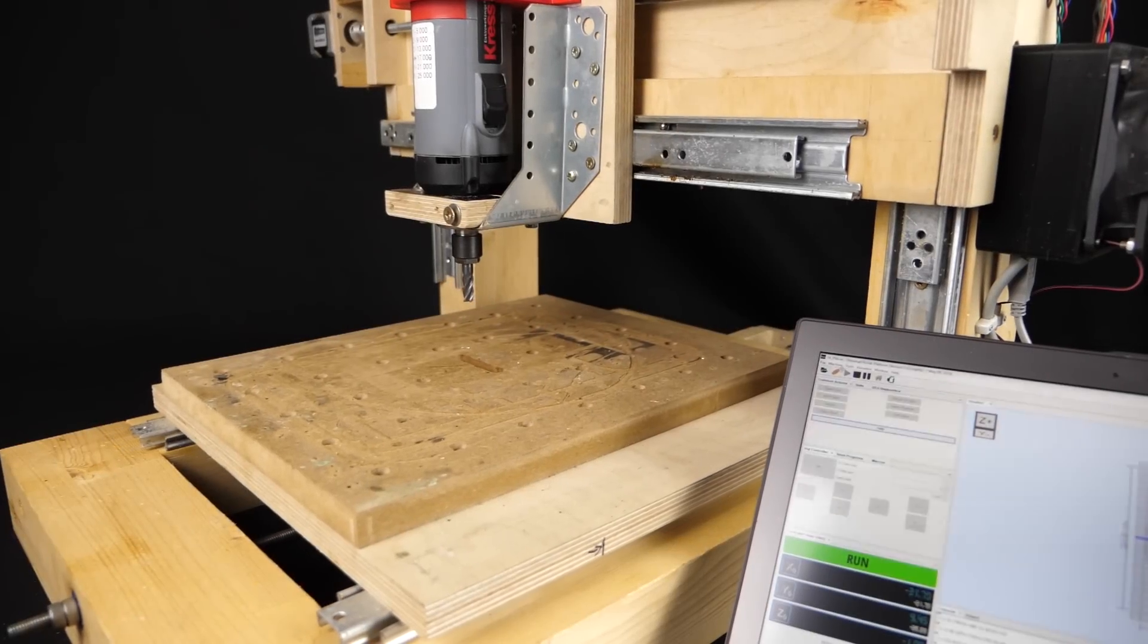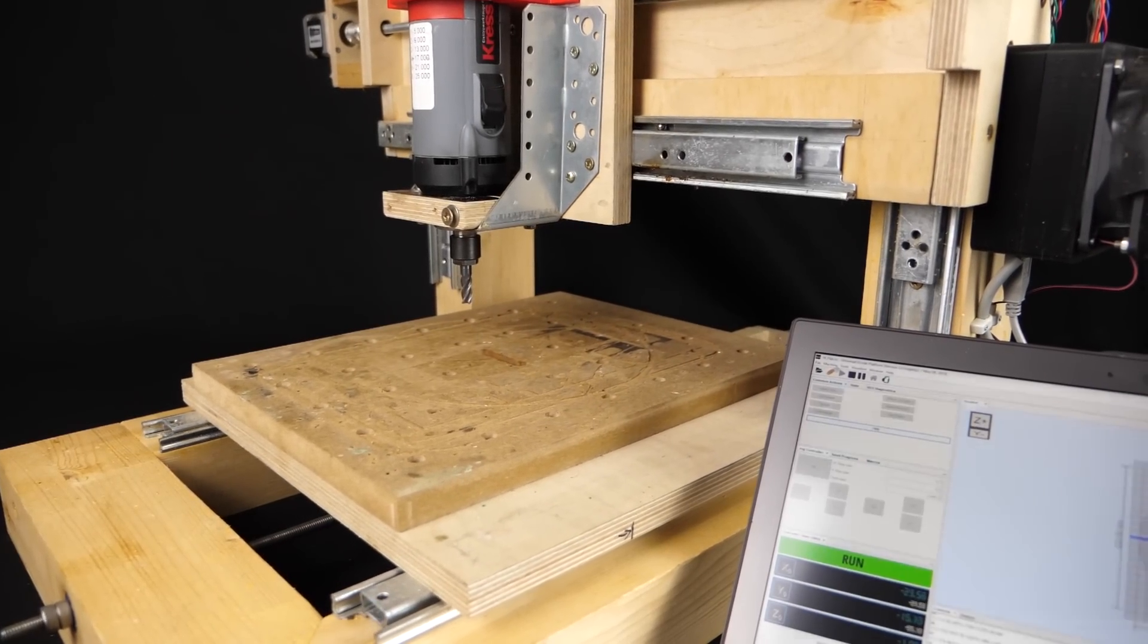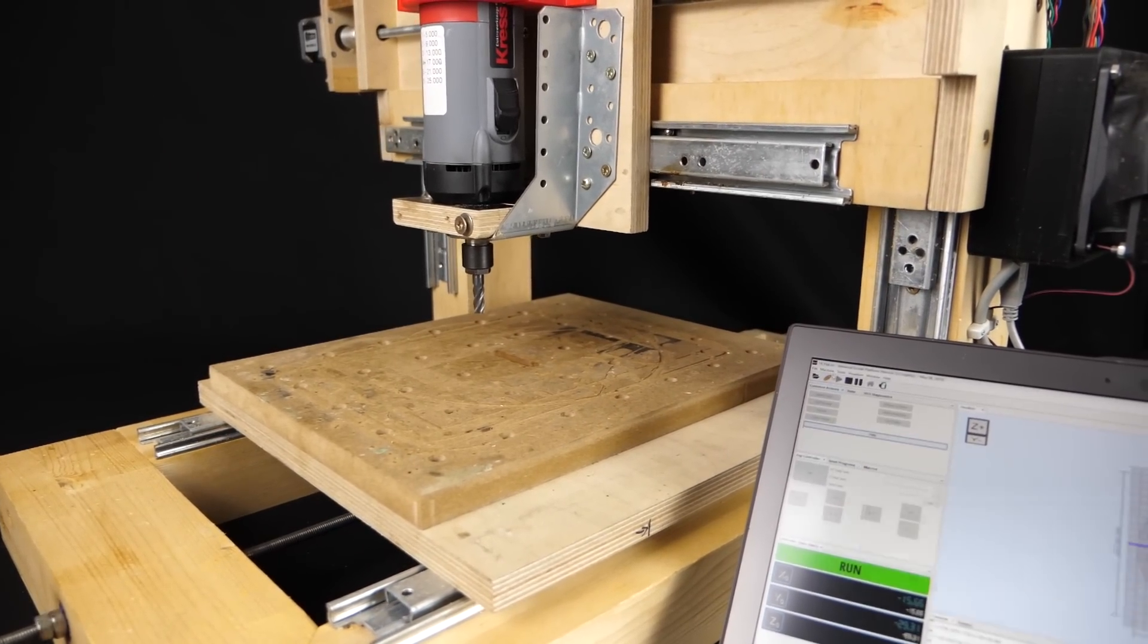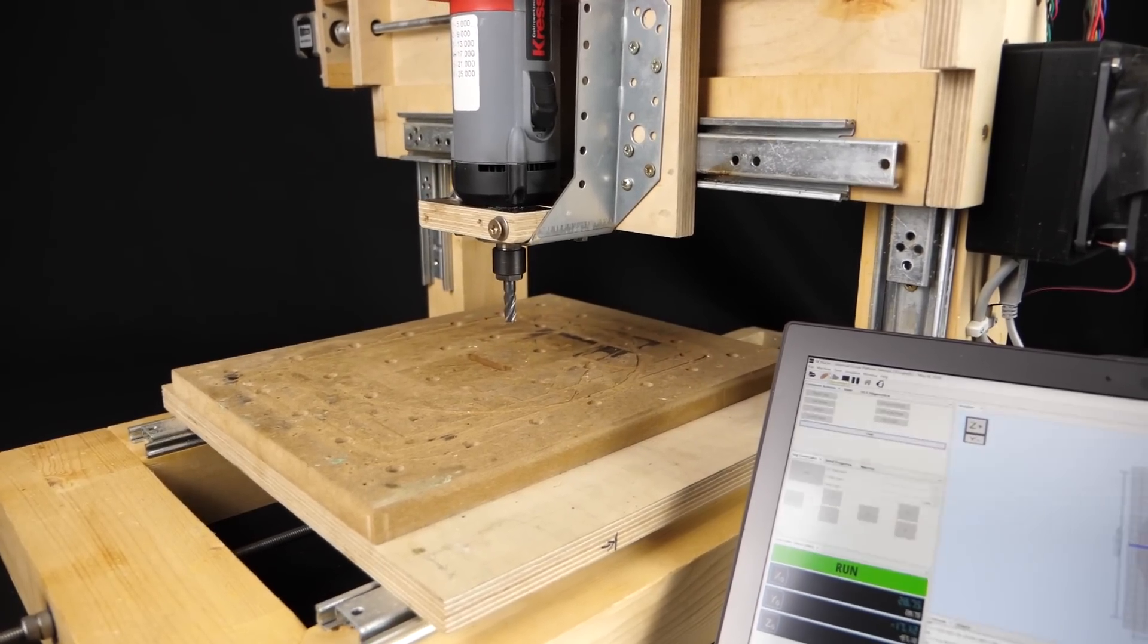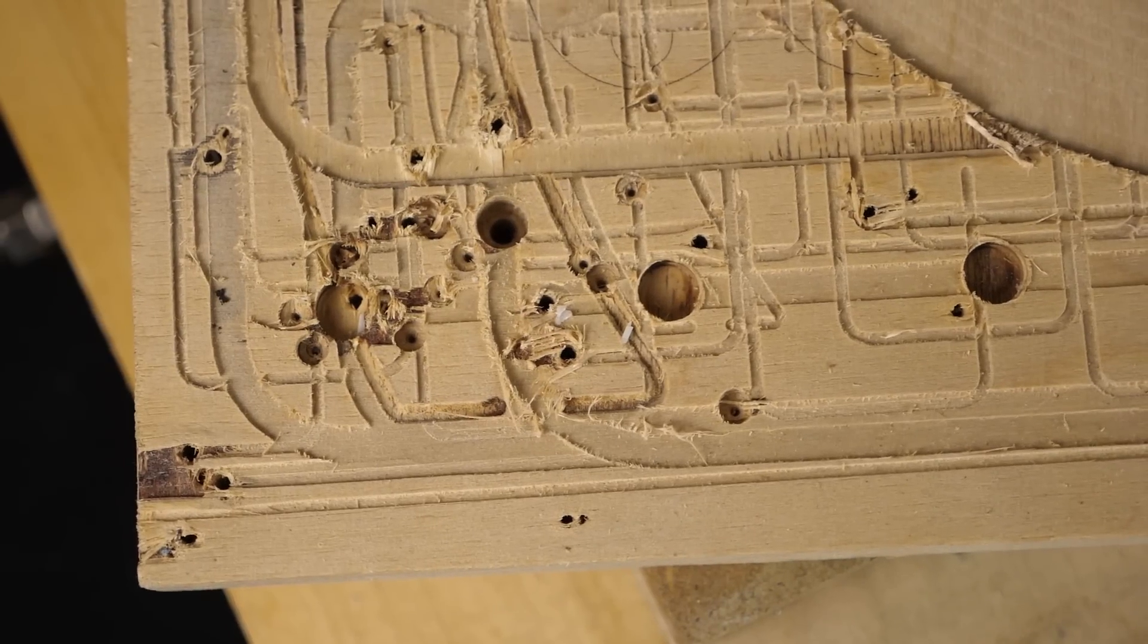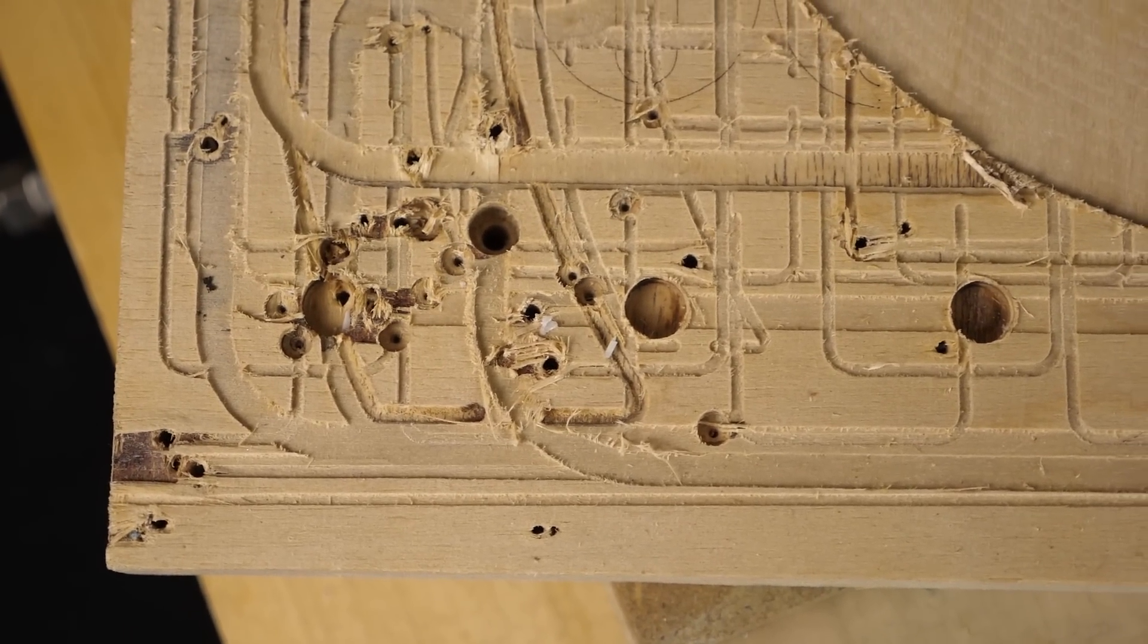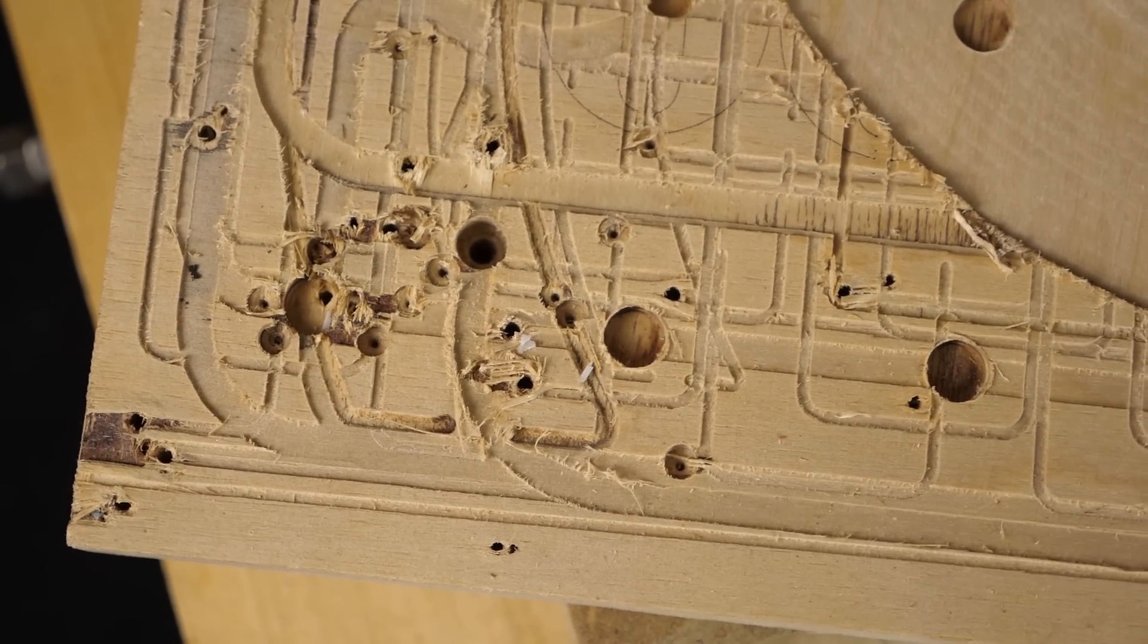Obviously with a wooden router you can't really use flood cooling for cutting but low amounts of cutting oil when working on metals hasn't harmed my machine during the years. In the beginning I always mounted sacrificial pieces of MDF to the machine table in which I screwed in the pieces of wood.